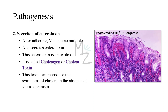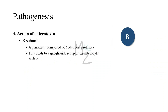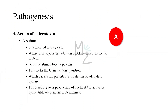Step two: secretion of enterotoxin. After adherence, the organism multiplies and secretes an enterotoxin — cholera toxin or choleragin. A high-yield point is that this toxin can reproduce the symptoms of cholera even in the absence of Vibrio organisms. Step three: action of enterotoxin. Choleragin consists of an A (active) subunit and a B (binding) subunit. The B subunit is a pentamer — composed of five identical proteins — and it binds to a ganglioside receptor on the surface of the enterocyte. The A subunit is inserted into the cytosol, where it catalyzes the addition of ADP-ribose to the Gs protein.